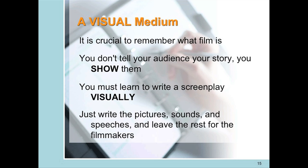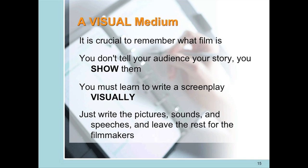Remember, you're writing for a visual medium. It's crucial to remember what a film is at all times during your writing. The creative writing associated with script writing is different than any other type of creative writing. You don't write as if you were telling your audience the story — it shows them what's happening in the story. You must learn to write visually. A script consists of the pictures, the sounds, and the speeches made by the characters. Everything else you leave to the rest of the filmmakers. In a script, you write what the audience sees and what they hear only.